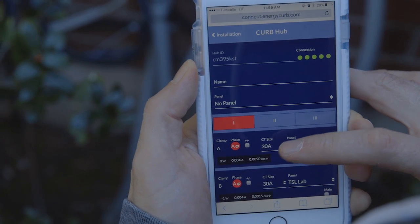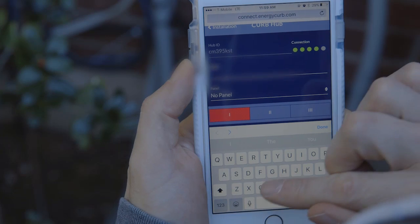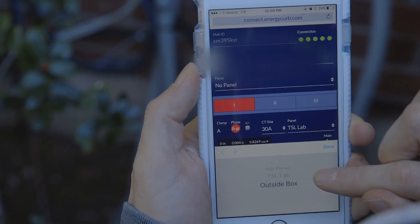Name the Curb hub and specify if the panel is a primary or secondary breaker panel.